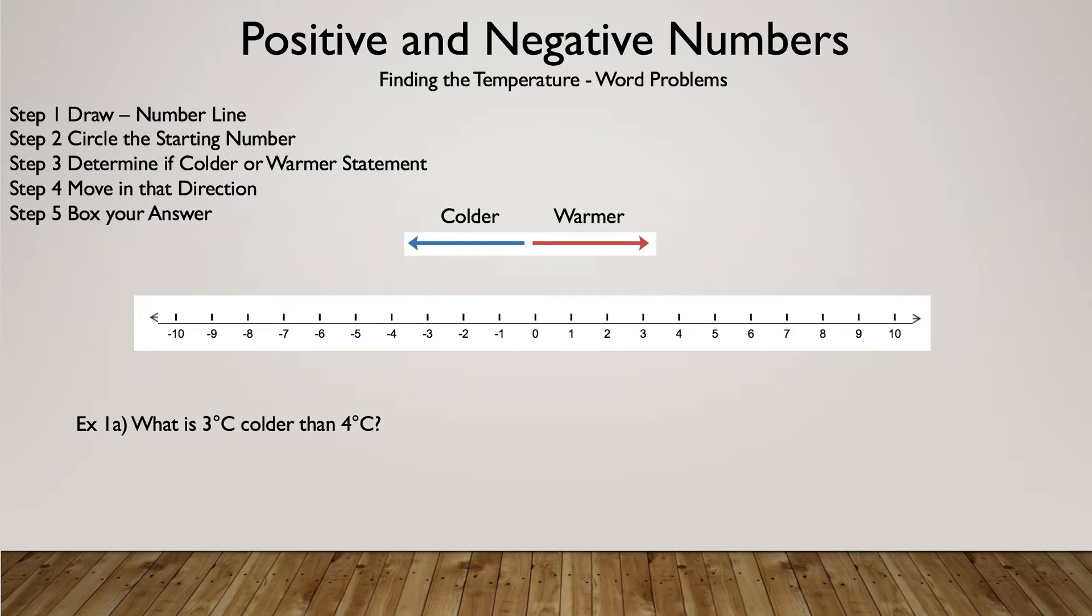What is three degrees colder than four degrees? So in this case, four degrees is my starting number. Why? Because that is the one you are changing. So since we are changing that one, we are going to go ahead and circle that number. Then we are going to determine, since it says colder, we are going to go to the colder side. And then we are going to go there three times. One, two, and three. Then we are going to box the one, which is now my answer, one degree Celsius.